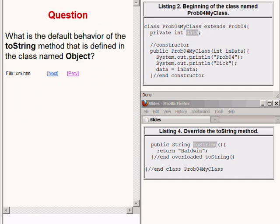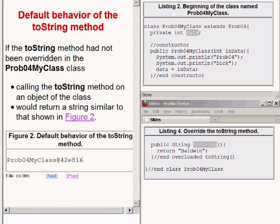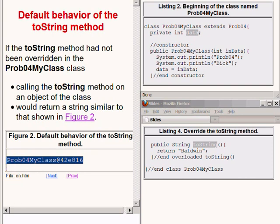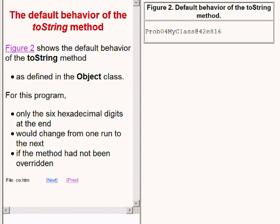What is the default behavior of the toString method that is defined in the class named Object? I will answer that question with an example. If the toString method had not been overridden in the class named prob04 MyClass, then calling the toString method on an object instantiated from that class would return a string similar to that shown here. An illustration of the default behavior of the toString method is shown on the right side of your screen.